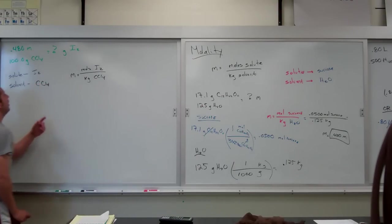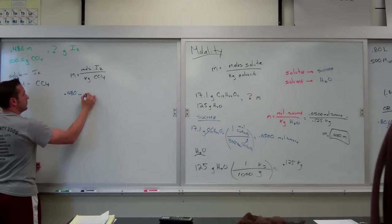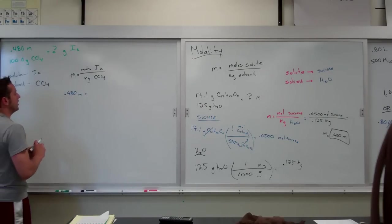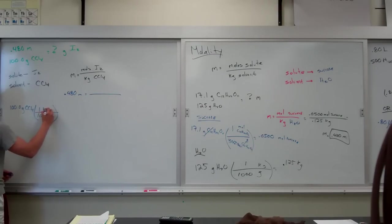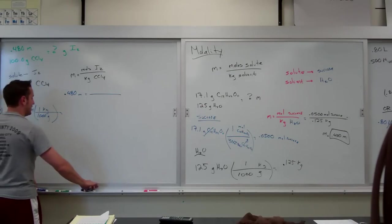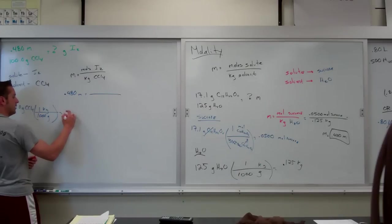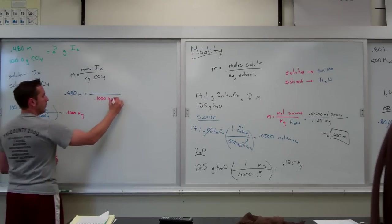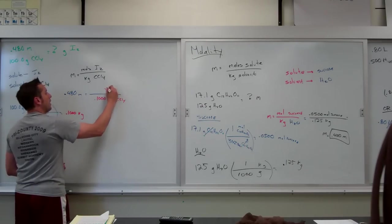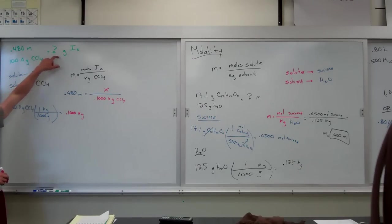We think about what of these we were given. Was I given moles of I2? I was not. Was I given little m? Yes, I was. Little m is 0.480. Was I given kilograms of CCl4? I was not. But I was given grams. So easy enough to convert grams of CCl4 to kilograms, just like we did in the last problem. 1,000 grams in one kilogram. Move the decimal three to the left. That makes this number 0.1000 kilograms. Which means we must be trying to find the moles of I2 to get it to grams. So, if I am going to get x by itself in this problem, it looks like I want to multiply by 0.100 on both sides.